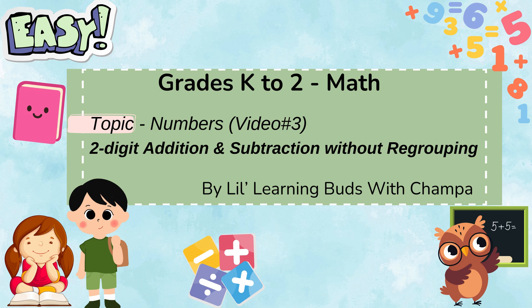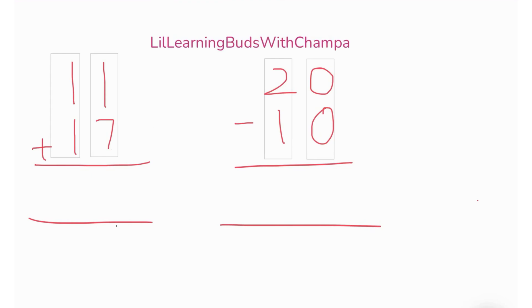We are learning two-digit addition and subtraction, and guess what — no regrouping needed! That means no carrying and no borrowing, just simple math. Are you ready? Let's go. Simple addition, two digits.